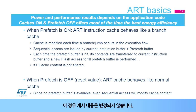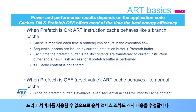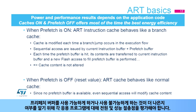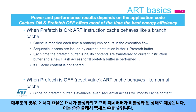In this case, the cache content is not altered. If the prefetch buffer is disabled, the ART instruction cache behaves like a normal cache. Since no prefetch buffer is available, even a sequential access will modify the cache content. The power and performance trade-off must be evaluated for each application to know whether it is better to enable or disable the prefetch buffer. For most applications, enabling the prefetch buffer slightly increases performance but with higher consumption. Most of the time, the best energy efficiency is provided with caches enabled and the prefetch buffer disabled, as it often reduces the number of flash accesses.